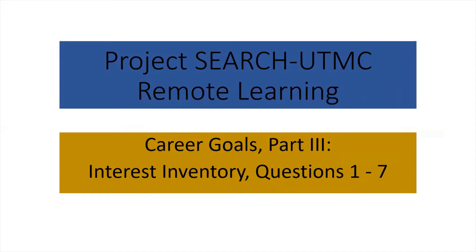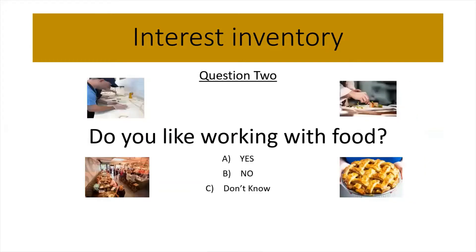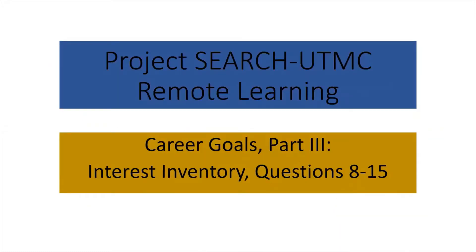The first part of the Interest Inventory, questions 1 through 7, we did three weeks ago. You should still have your piece of paper on which you wrote your answers to those first seven questions about the types of work you prefer and environments that you like. The following day, we continued that Interest Inventory with questions 8 through 15. Those answers should be on that same piece of paper. Use that same piece of paper with your previous answers to answer the questions in today's presentation.